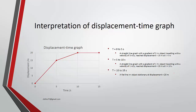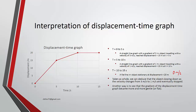In this case, the speed is 0 meters per second. What I want you to see, taken as a whole, is that the object is slowing down — initially 3, then 1 meter per second, then 0 meters per second. Another way to visually see this is to look at the gradient of the displacement-time graph; it becomes more and more gentle or flat.